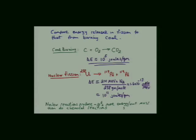For comparison, let's compare the energy from conventional chemical reactions to fission. If you burn coal — combining carbon with oxygen to make CO₂ — you get about 10⁵ joules per gram of energy released. Compare that to nuclear fission: splitting U-238 into two palladiums gives 214 MeV per event. Converting to the same units — using 238 grams per mole, Avogadro's number, and multiplying by 1.6×10⁻¹³ joules per MeV — for fission you get 10¹¹ joules per gram.